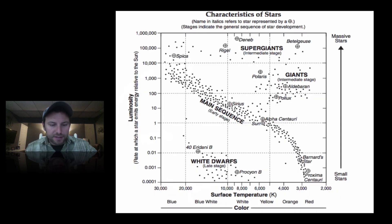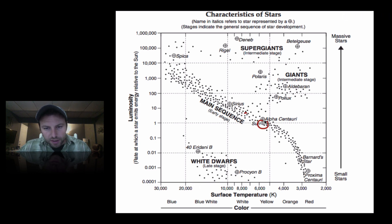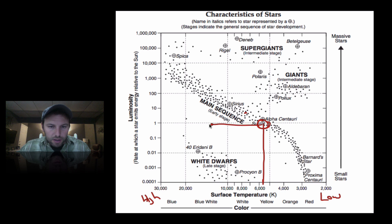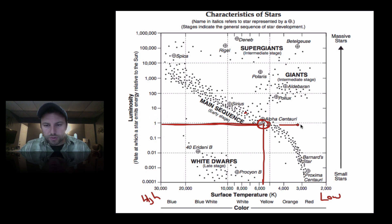When looking at the characteristics of stars chart, this is where stars spend most of their life — right here in the main sequence. Here's our sun. Notice the surface temperature on the bottom — it starts low on the right and moves to a high temperature on the left, countering what we typically expect. Our sun sits at about 5,800 degrees Kelvin. Luminosity is about one — when you compare the sun to itself it has a ratio of one — and it shows here that it's a relatively average star.